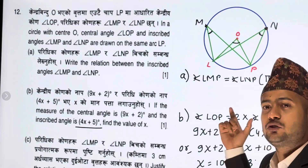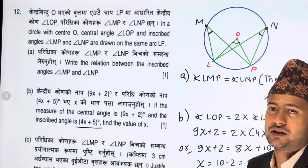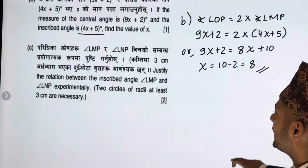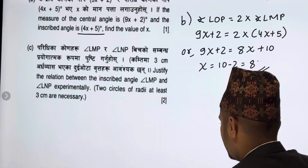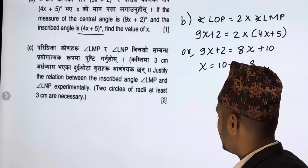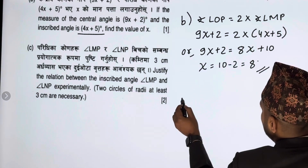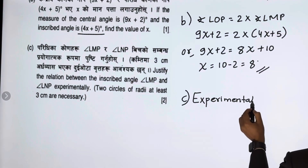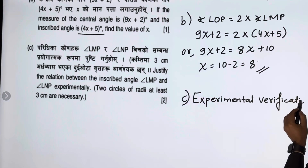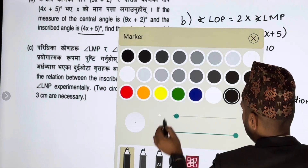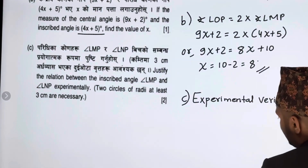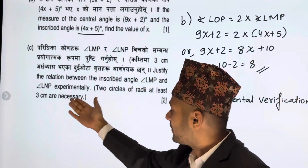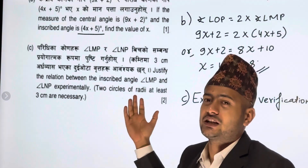The next question: justify the relationship between inscribed angle LMP and LNP experimentally, using two circles of radius at least 3 cm. This is the experimental verification. We generally draw two circles for this — one with 3 cm radius and one with 4 cm radius.